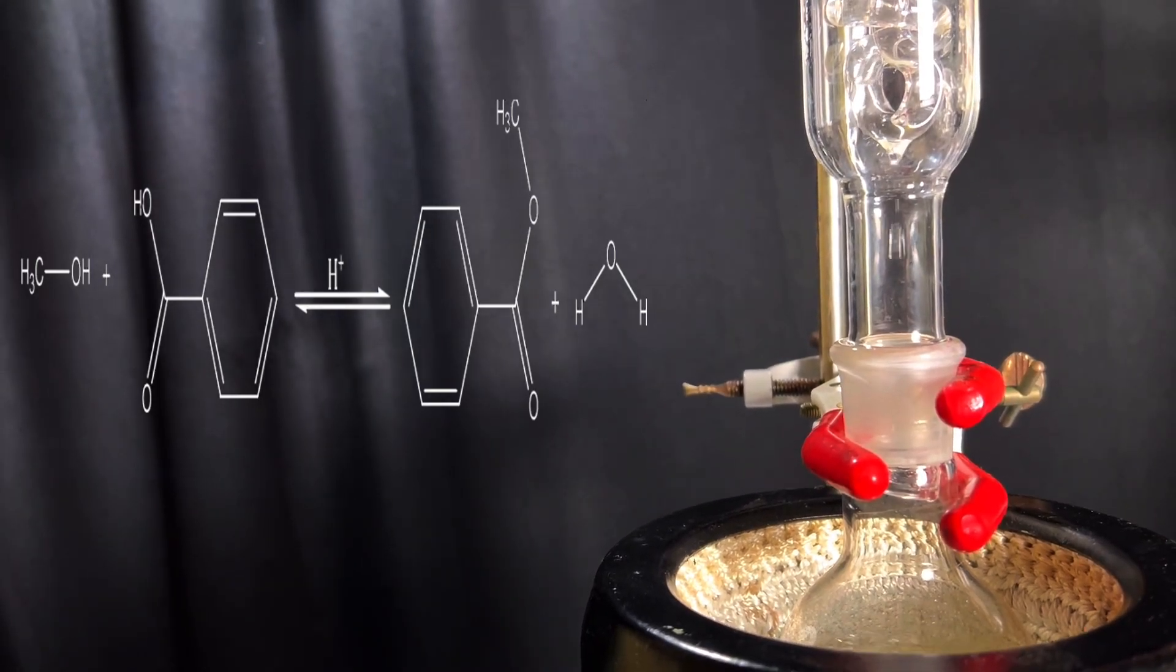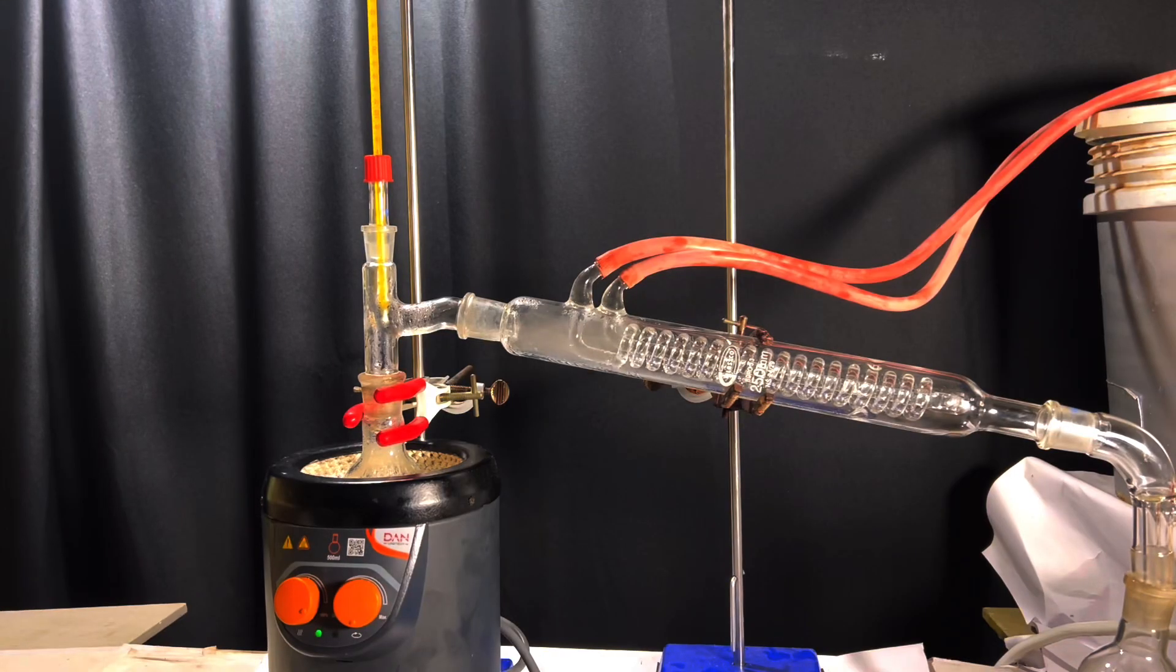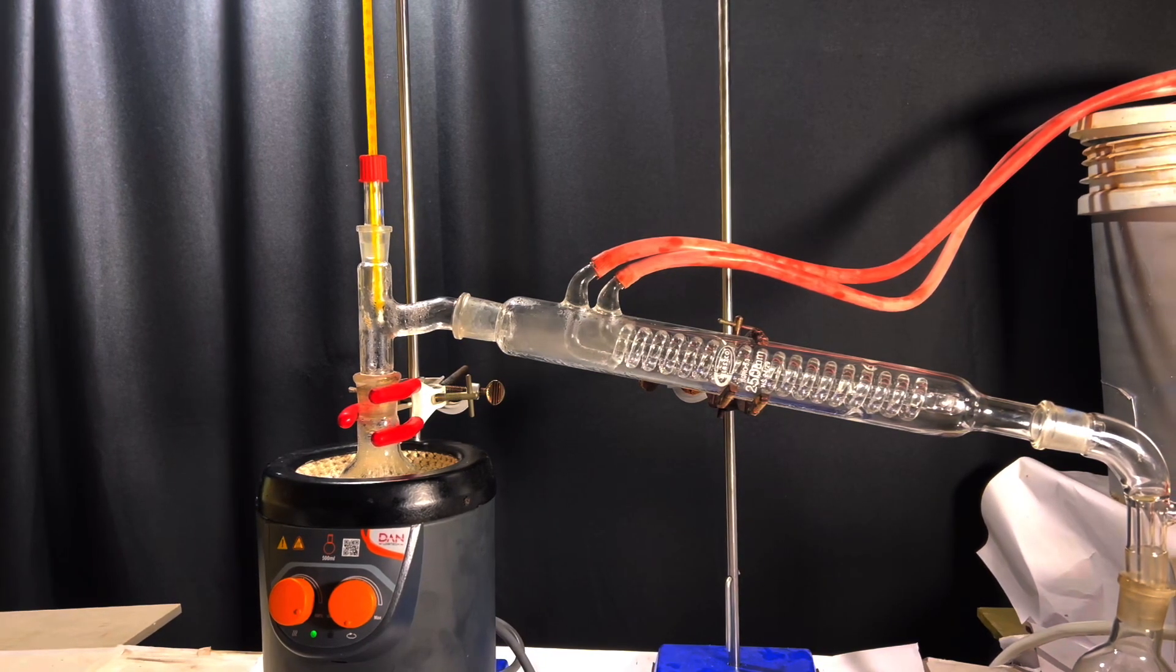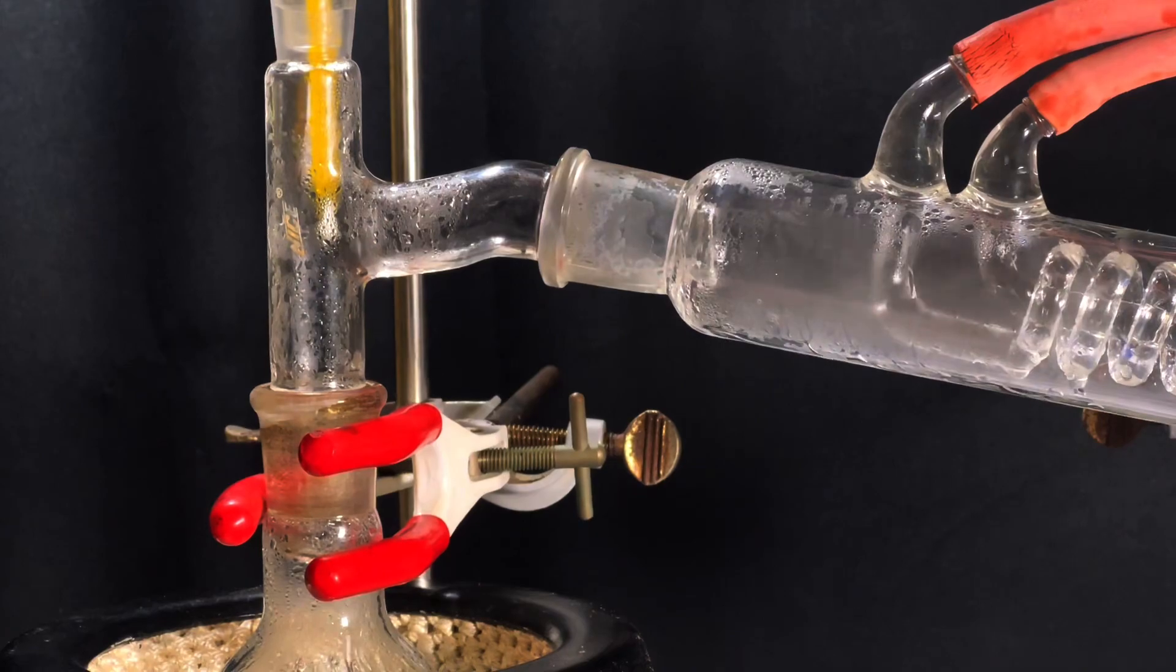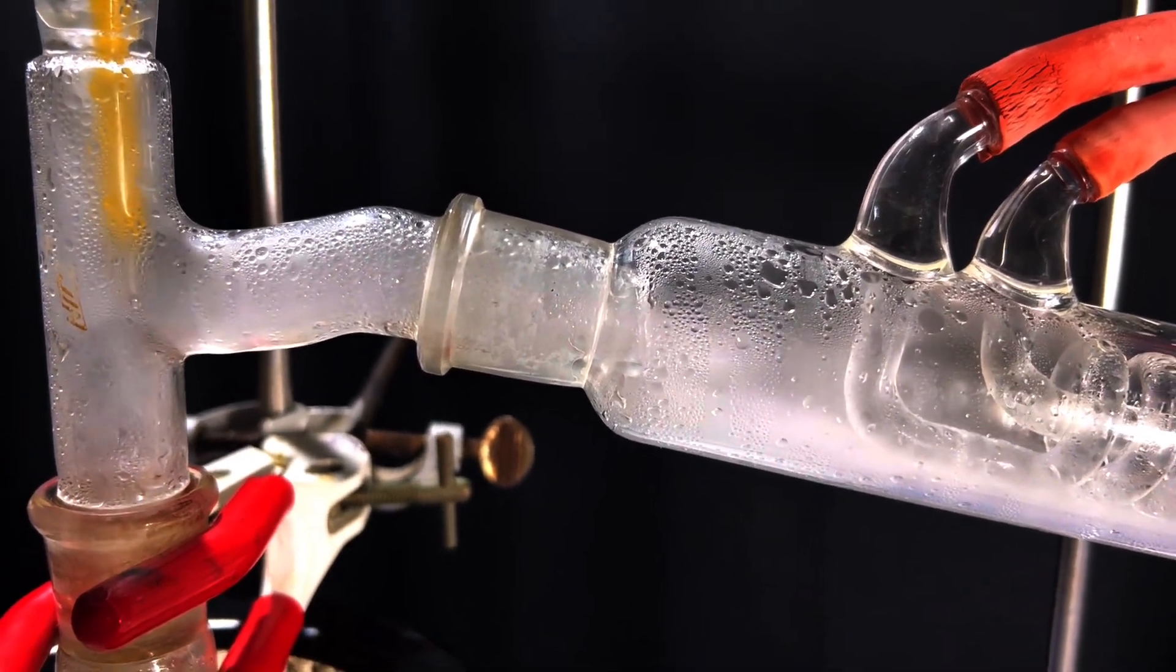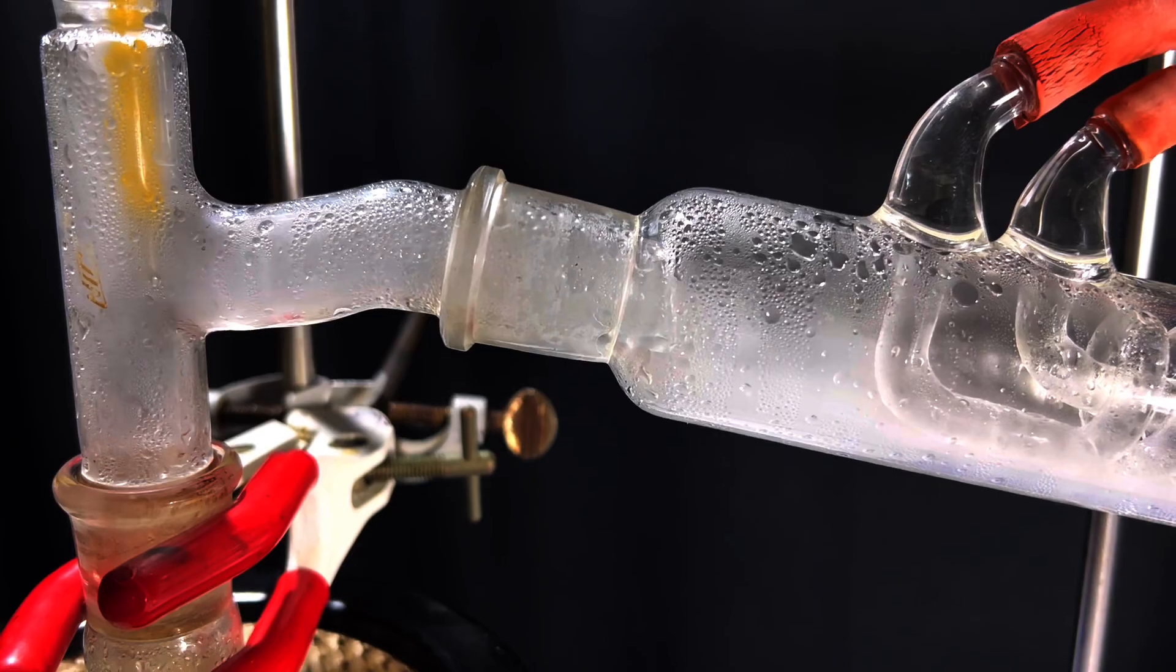After 4 hours the mixture was set for downward distillation. Initially unreacted methanol boils over and then water. And finally methyl benzoate distills over at 199 degrees C. Finally we get the sweet smell of methyl benzoate. It was found to be 7 milliliters.